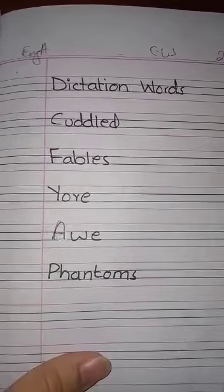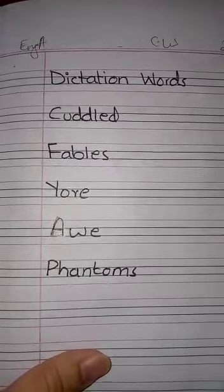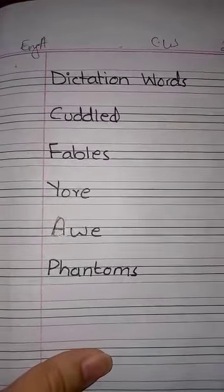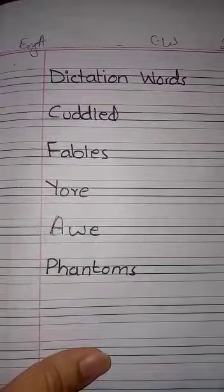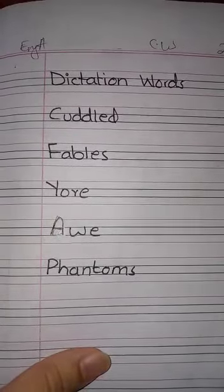The dictation words are: first word is cuddle, second is fables, third is yours, fourth is of, fifth is phantoms.